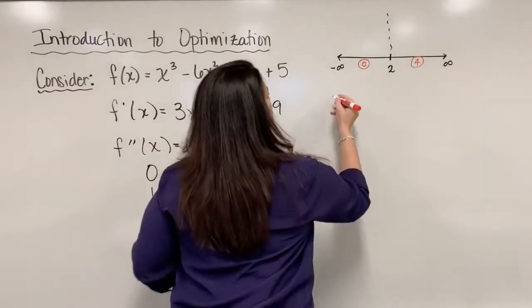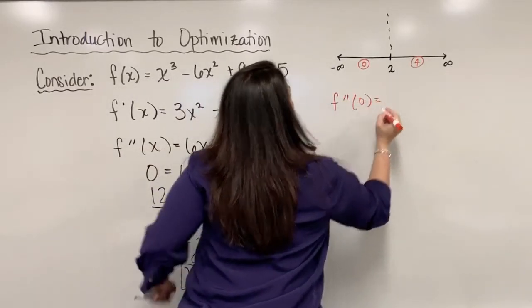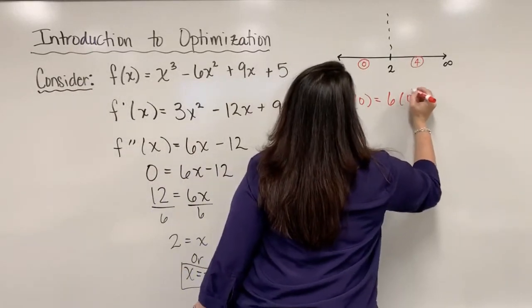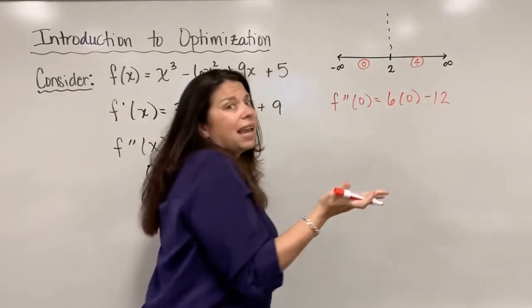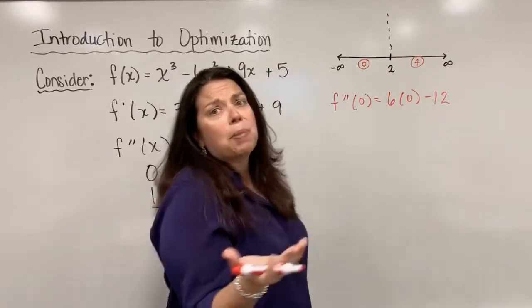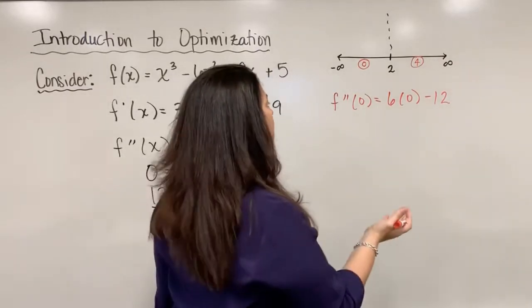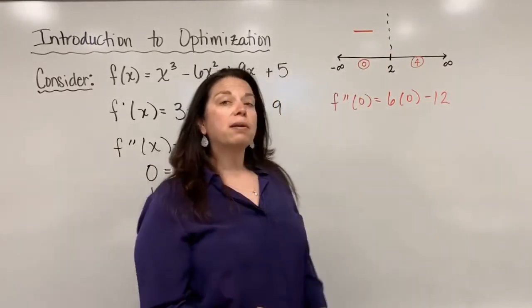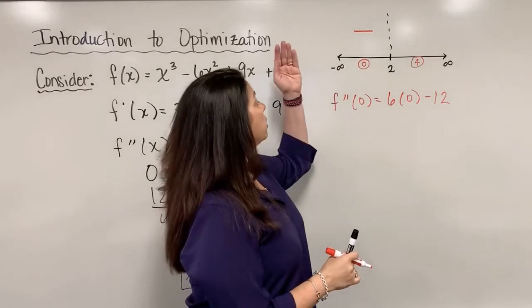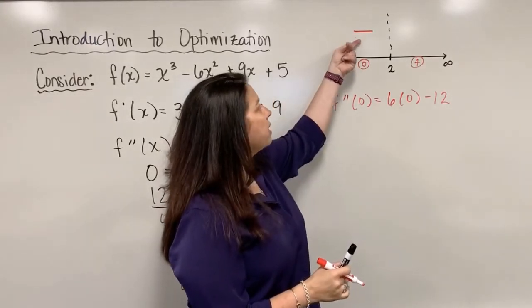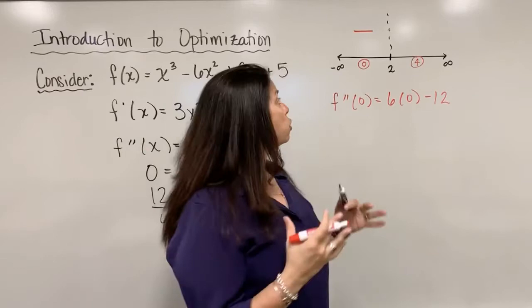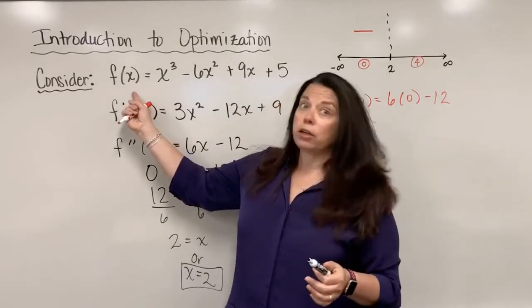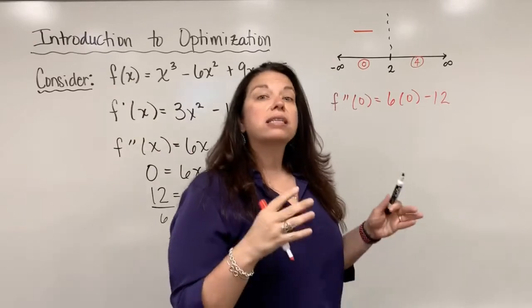We'll start with 0. We'll go to the actual second derivative equation and evaluate that equation at 0. So f''(0) equals 6 times 0 minus 12. We don't really care what the actual value is, just that it is positive or negative, and in this case we have a value that comes out to be negative. When the second derivative is negative in a particular region, that reveals that in that region the graph of the original function f(x) is concave down.